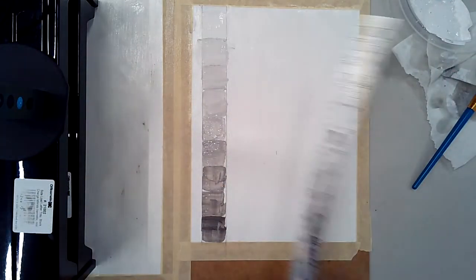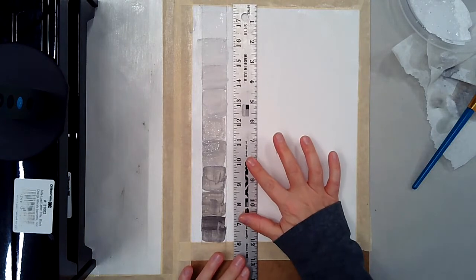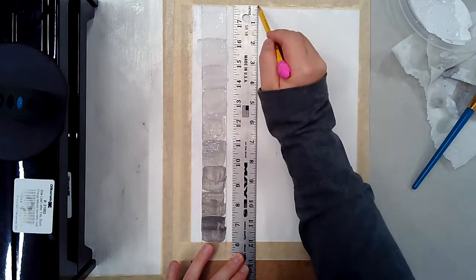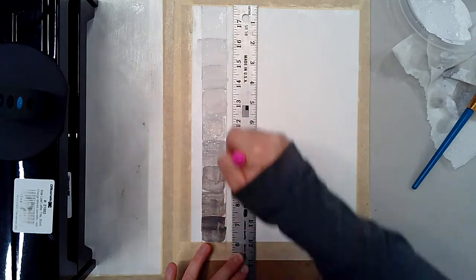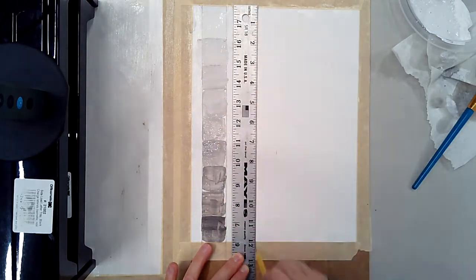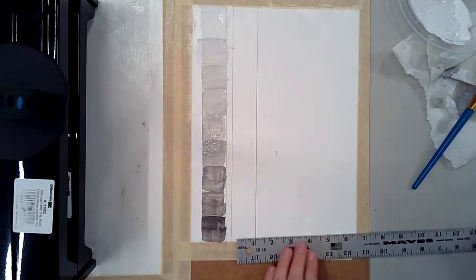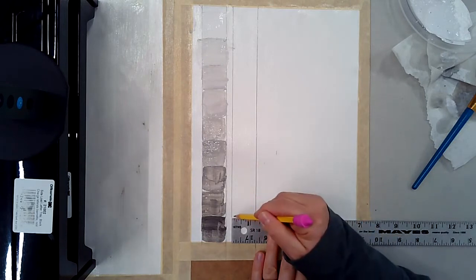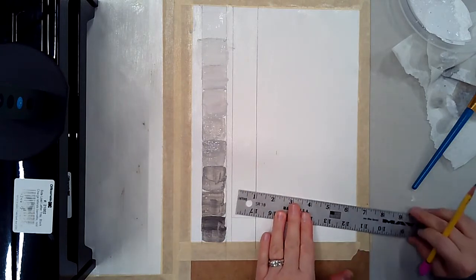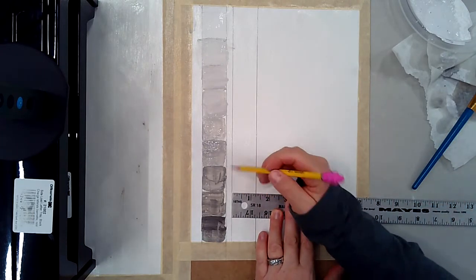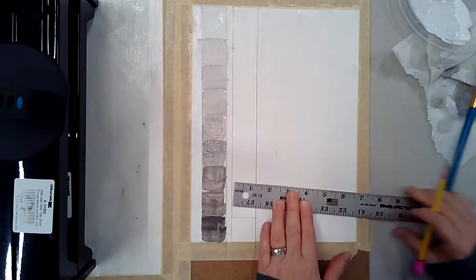So again, just using the width of that ruler and then changing the direction of it and using the width of this to create more squares. Now I probably won't need the whole row, but I'm going to draw it in just in case.